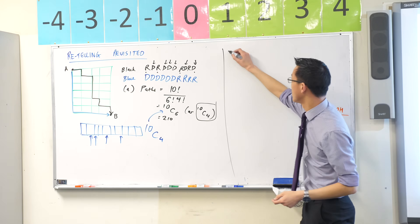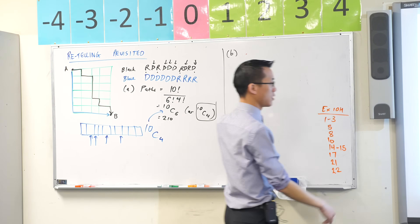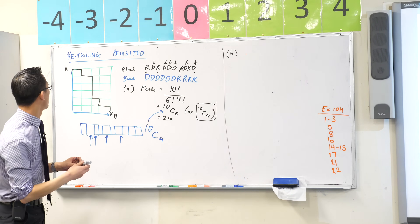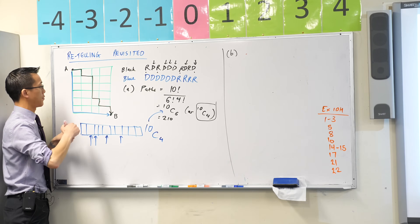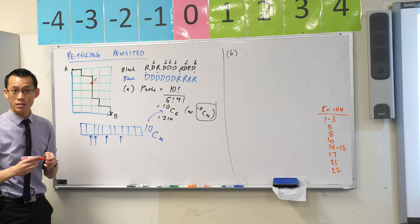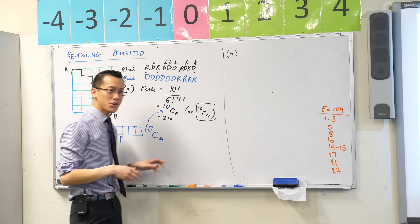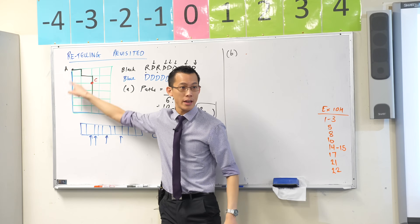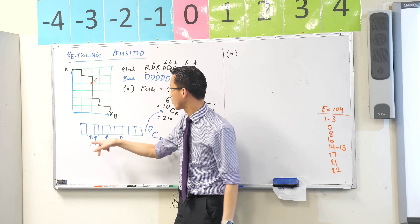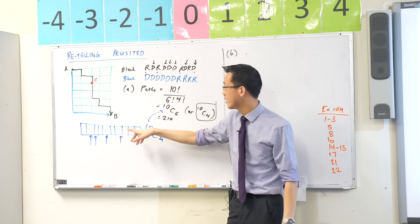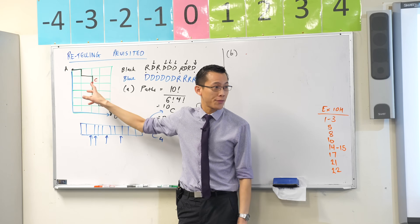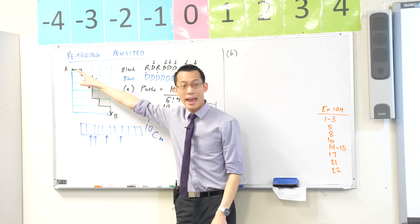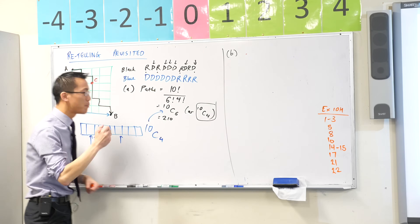Now let's have a look when we start to add some conditions. Okay, so part B — what condition does it give us? How many different routes are possible if you must pass through C? So if I want to pass through C, I've got to go from A... you can't do this blue one, it's no good. The black one's okay though, it passes through C. So you've got to go from A to C first because you can't backtrack — you can't climb back up. So you've got to get from A to C, and that's kind of like its own mini problem.